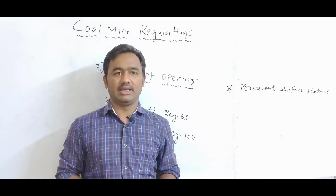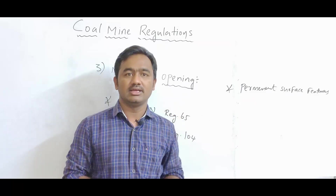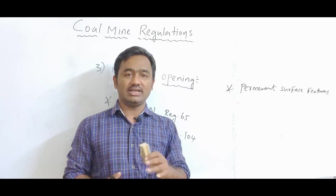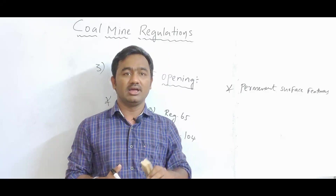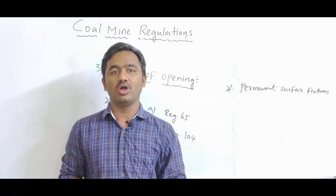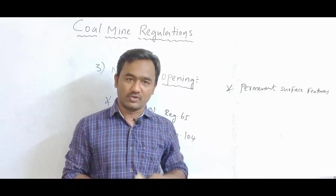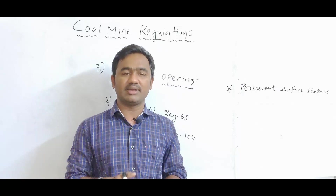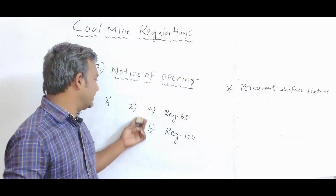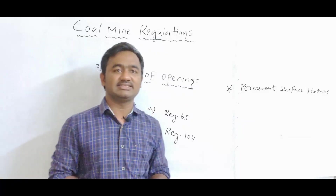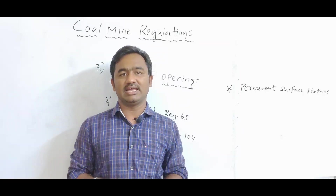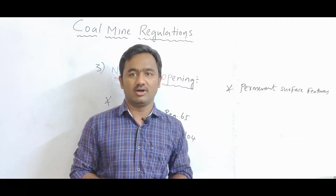The third point: when a mine is opened, the owner, agent, or manager must communicate the actual date of opening. This information along with Class A and Class B plans — the surface plan and the safety management plan — must be sent to the Regional Inspector and the District Magistrate.